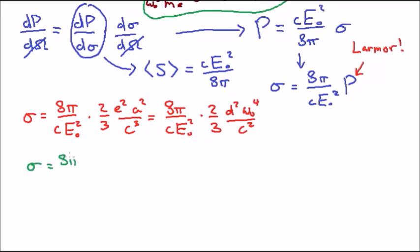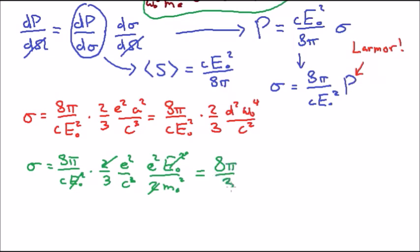So we get that our sigma is equal to 8π over c E₀² times 2/3 e² over c³, times the e² from the acceleration, times E₀² over 2 m_e². And we can cancel out a bunch of these terms. And we end up with the result that the cross-section is equal to 8π/3 e⁴ over m_e² c⁴.